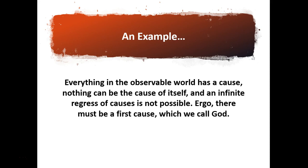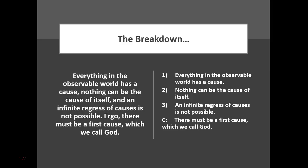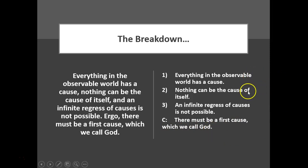Everything in the observable world has a cause. Nothing can be the cause of itself. And an infinite regress of causes is not possible. Ergo, there must be a first cause, which we call God. This is actually an argument from Aquinas's five ways — five arguments for the existence of God. Breakdown: conclusion — there must be a first cause, which we call God. Three premises above it. Notice all of those were packed into one sentence and need to be unpacked and articulated. One claim per line.